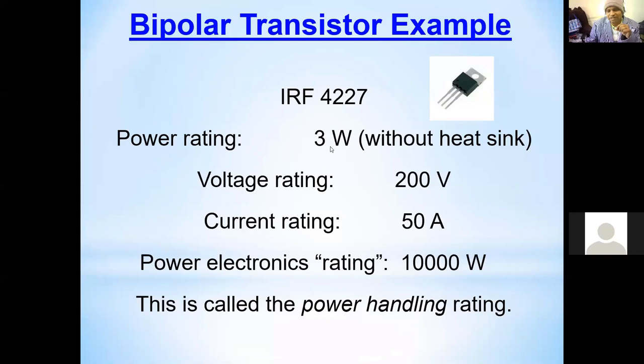How we calculate in a semiconductor device: there is an on-state voltage drop and the leakage current. Multiply that, you get the power rating of that device. The voltage rating you can see here is 200 volts and the current rating is 50 amperes. So power electronic rating is 10,000 watts.